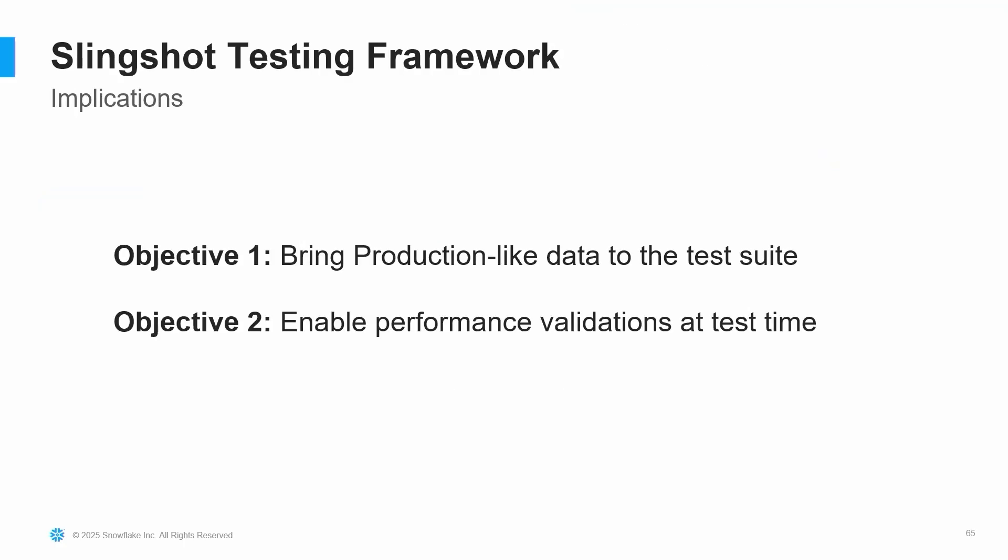So how did we do? We set out with two objectives: bring production-like data to the test suite, and enable performance validations at test time. Both objectives were met. What this allows is full control of cost and performance at all stages of the development lifecycle. The developer is truly empowered to do everything they need on their machine, and all stages of the SDLC benefit from this framework. Thank you all for coming.